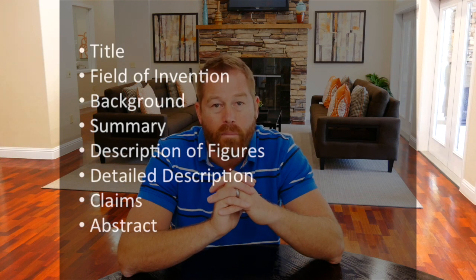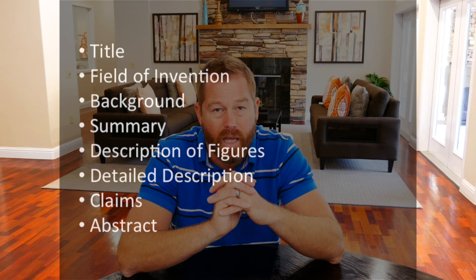All applications have an abstract. The abstract is a short, 150-word-or-less summary of the invention. So those are your headings, and we're going to go through them one by one as we prepare the patent application.